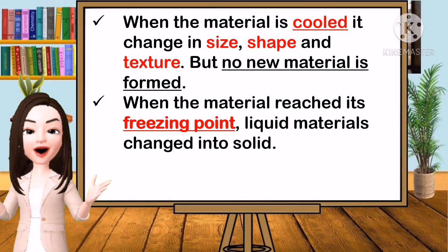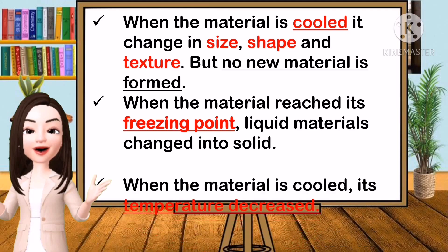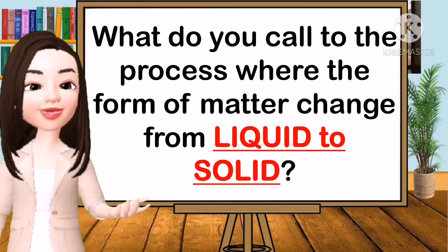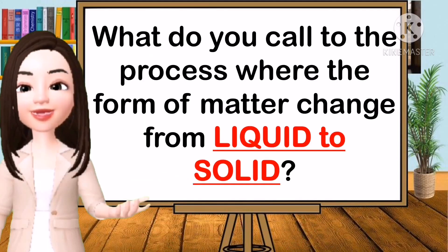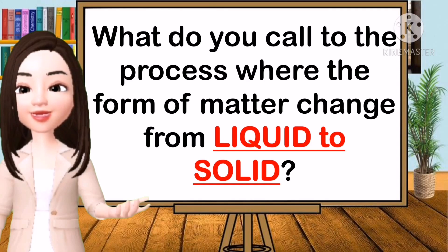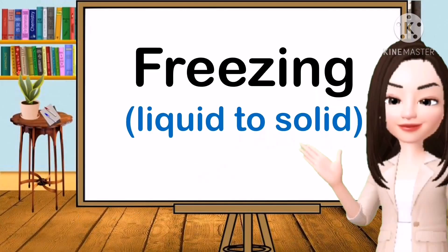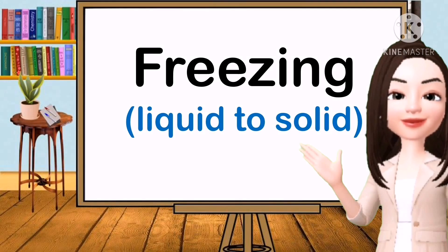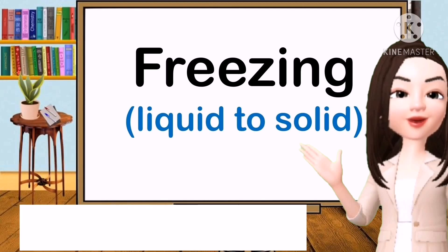When the material is cold, its temperature decreases. What do you call the process where the form of water changes from liquid to solid? It is called freezing. Freezing is when a liquid turns into solid because of the low temperature.